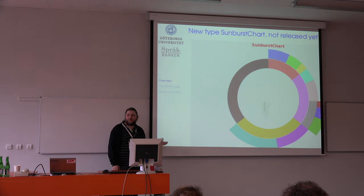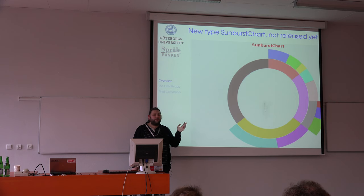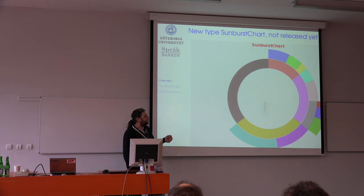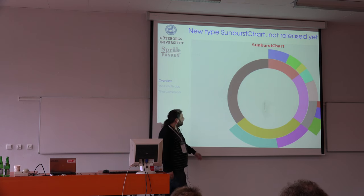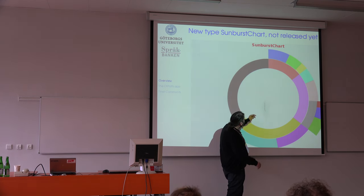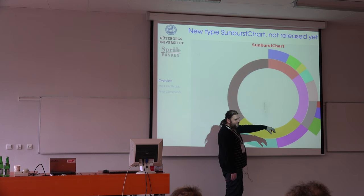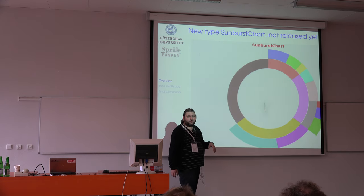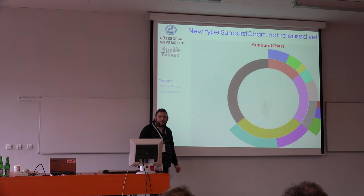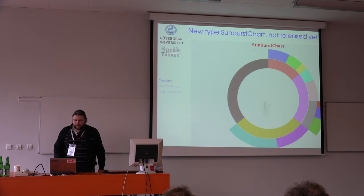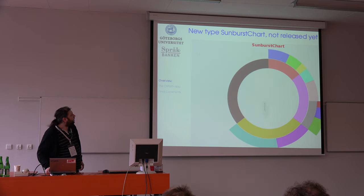This is a brand new — not yet released — chart type: the Sunburst chart. It's popular in some areas, similar to tree maps. You can see the sunbursts going out where you have different divisions of percentages. This is a completely new type of chart which will come very soon.